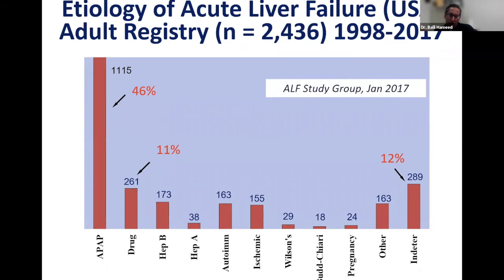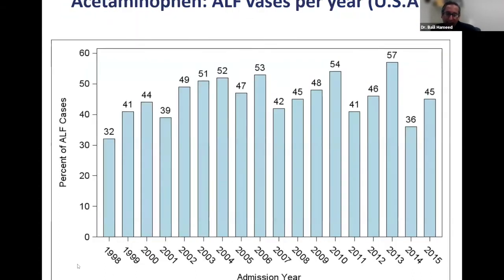The reason I'm discussing etiology is that once we talk about prognosis or outcomes in these patients, it depends upon the underlying etiology of acute liver failure. Based on that, it is very important to identify the etiology. Since 1998 to 2015, we have not seen a change in acetaminophen rates.